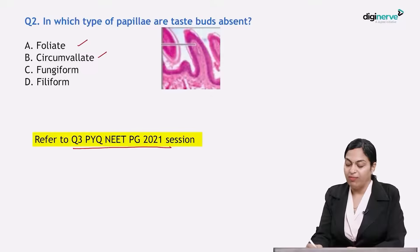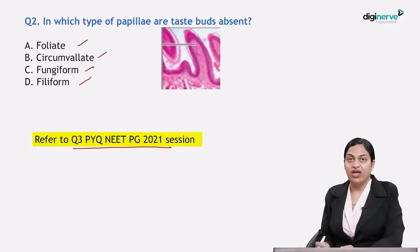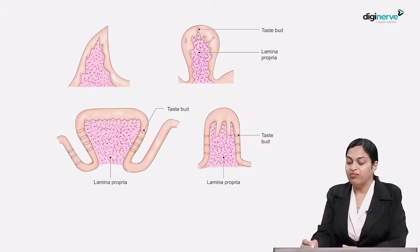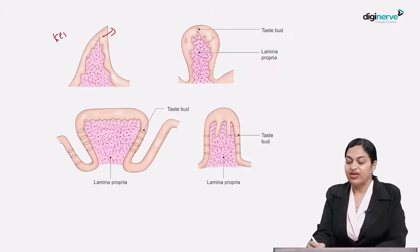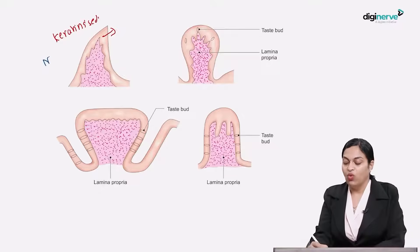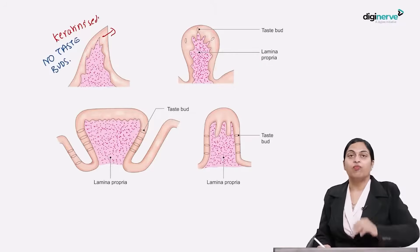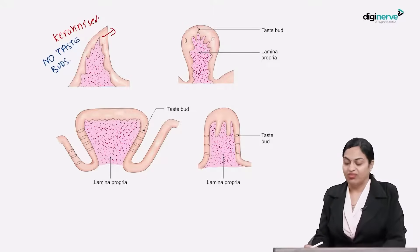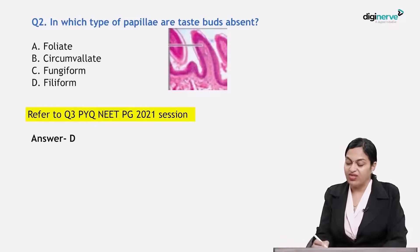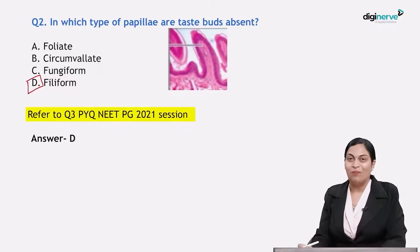We have four types of papillae: foliate, circumvallate, fungiform, and filiform. The filiform papillae have a keratinized tip and there are no taste buds. So the taste buds are absent in filiform papillae.